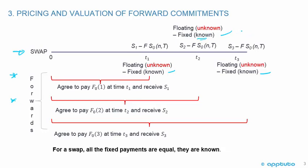The fixed rate is known in the swap and the floating rate is obviously the unknown. With a forward rate agreement, remember, there's only one payoff — that's the difference. So if you're looking at a swap, you can see there's a series of three payments. What they're comparing it to would be three forwards: the first forward where you agree to pay a fixed rate at time T1 and receive S1; the second forward where you agree to pay a fixed rate at time T2 and receive S2; and the third forward where you agree to pay the fixed rate at time T3 and receive S3.